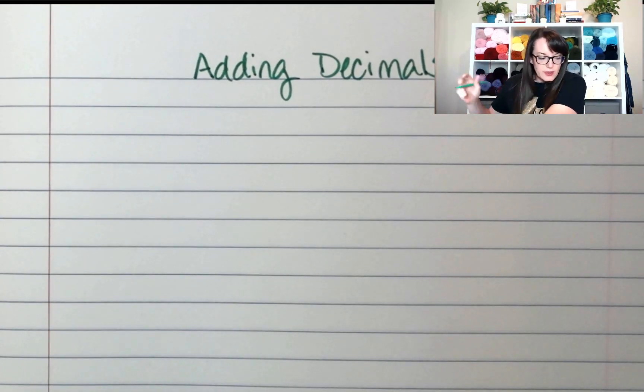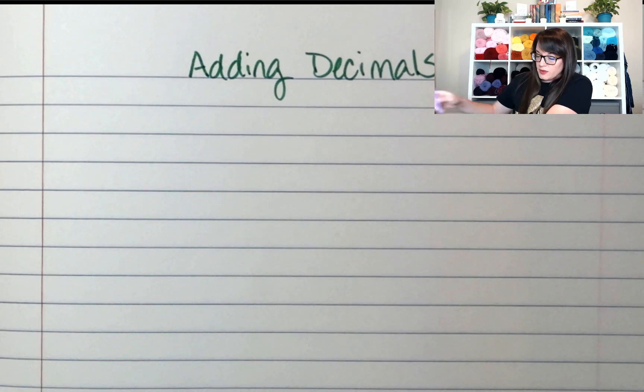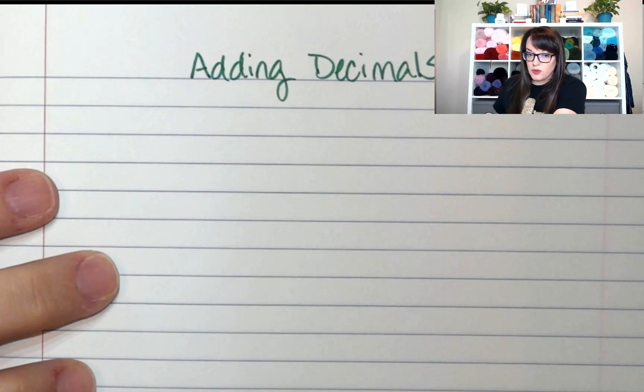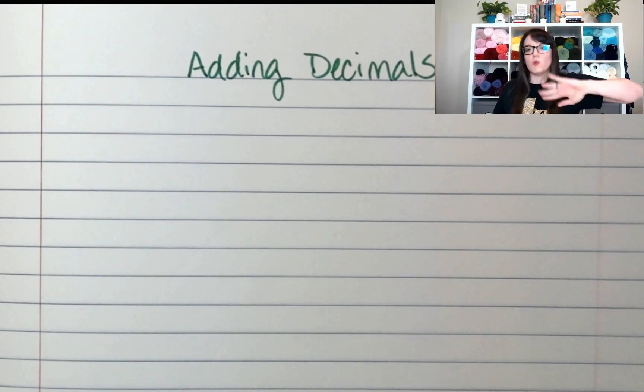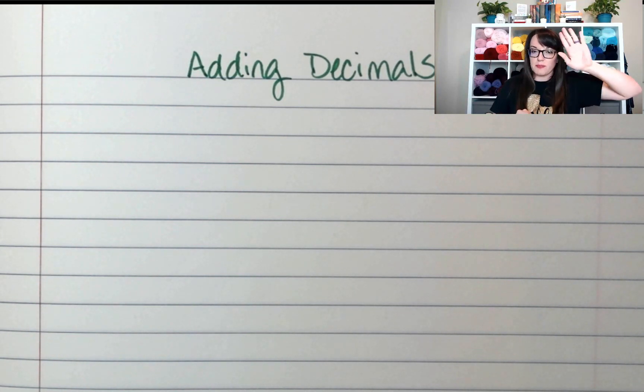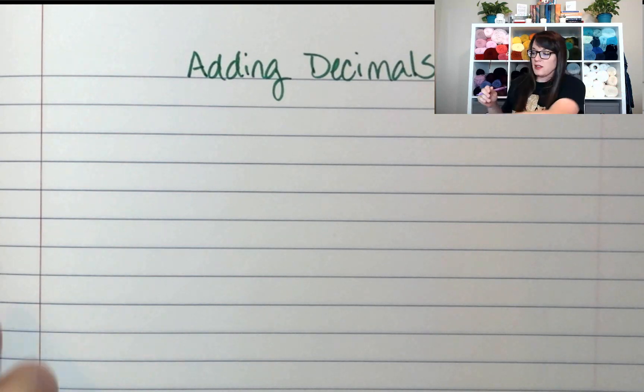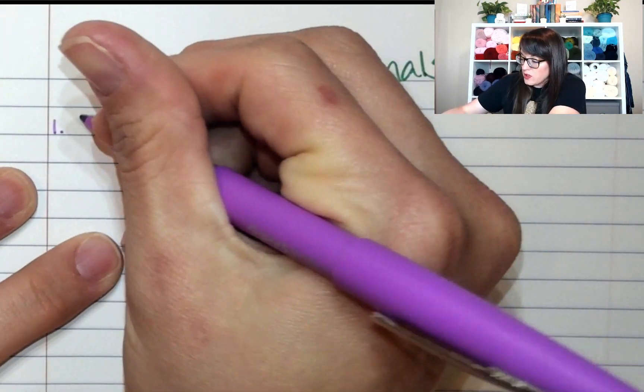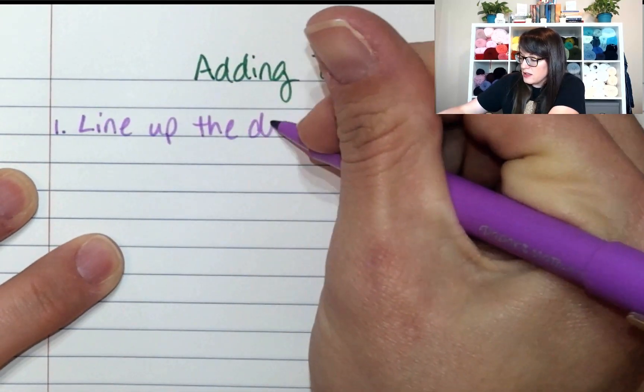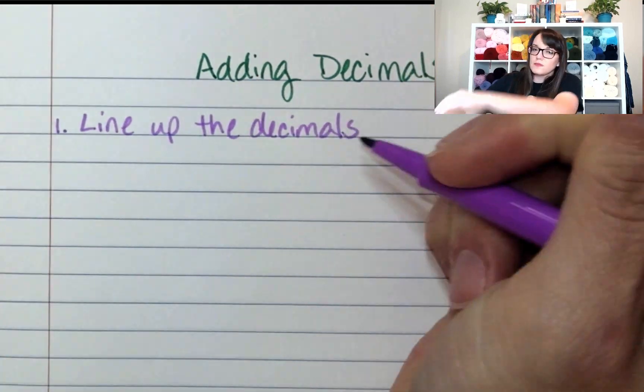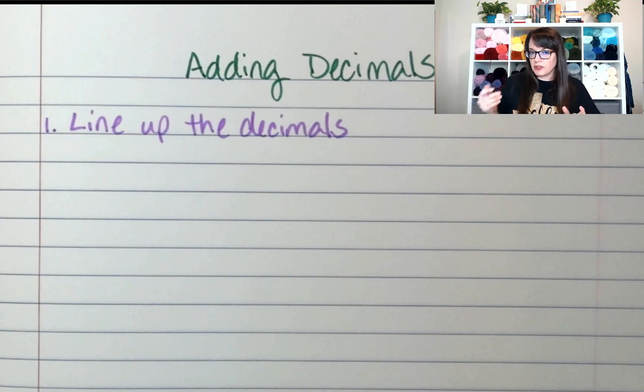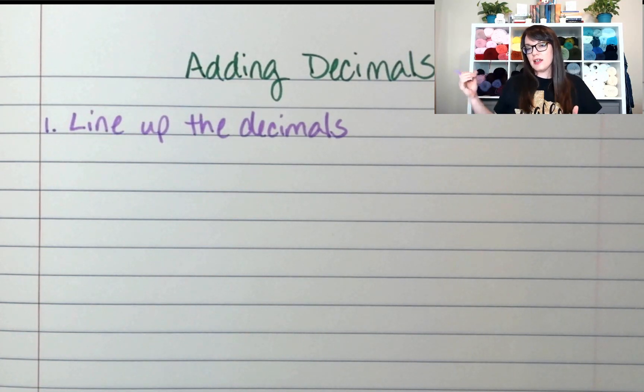The first thing we need to do is line up our decimals. Anytime we're adding or subtracting decimals, you have to line up the decimals because you want your ones place over the ones place, your tenths place over the tenths place. So step one, we're going to line up the decimals. Now what do you do if there's an empty space? You can put filler zeros in at the end to make sure it balances.